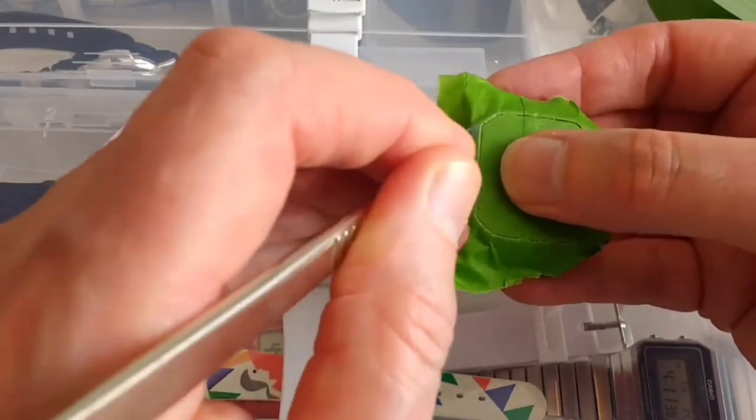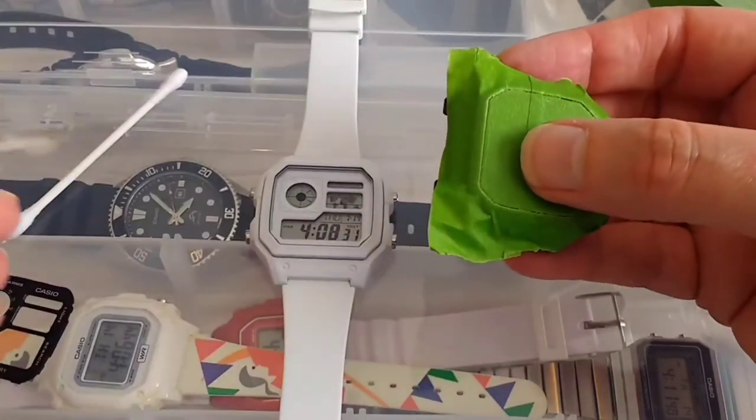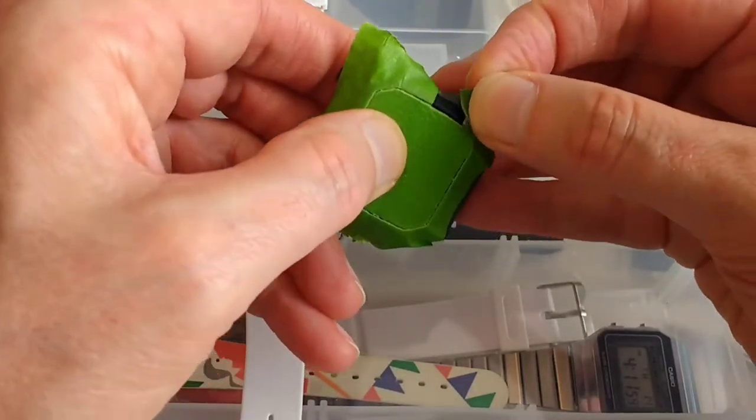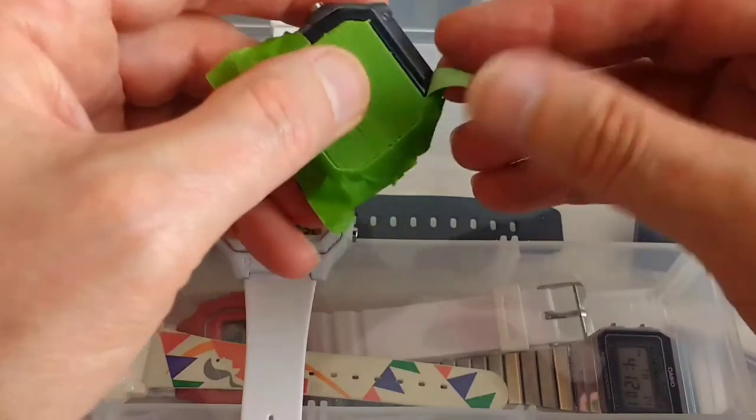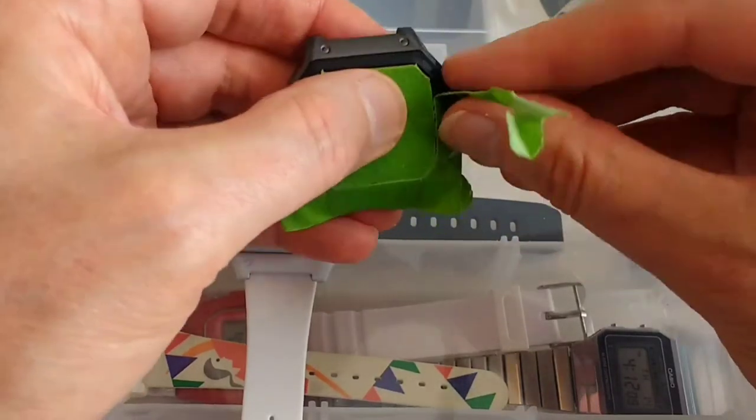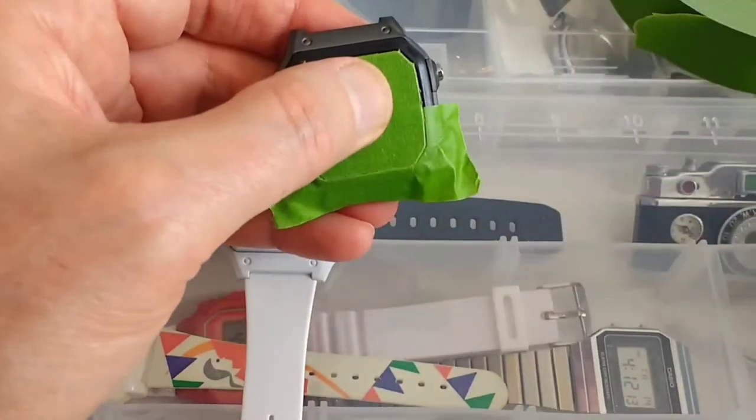You can mask the back as well if you want. And then the next bit is to peel off the excess tape that we don't need. Just start off on one side and then work your way around, being careful not to lift the tape that's actually going to stay on the crystal.